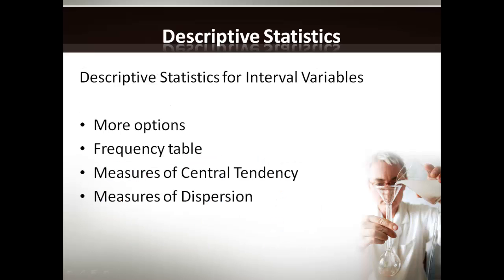Descriptive statistics for interval variables are slightly more complicated. Because interval variables are numerical and there are known distances between data points, it allows for more options with regards to describing them. Frequency tables can still be used; however, the preferred method tends to be measures of central tendency and measures of dispersion.